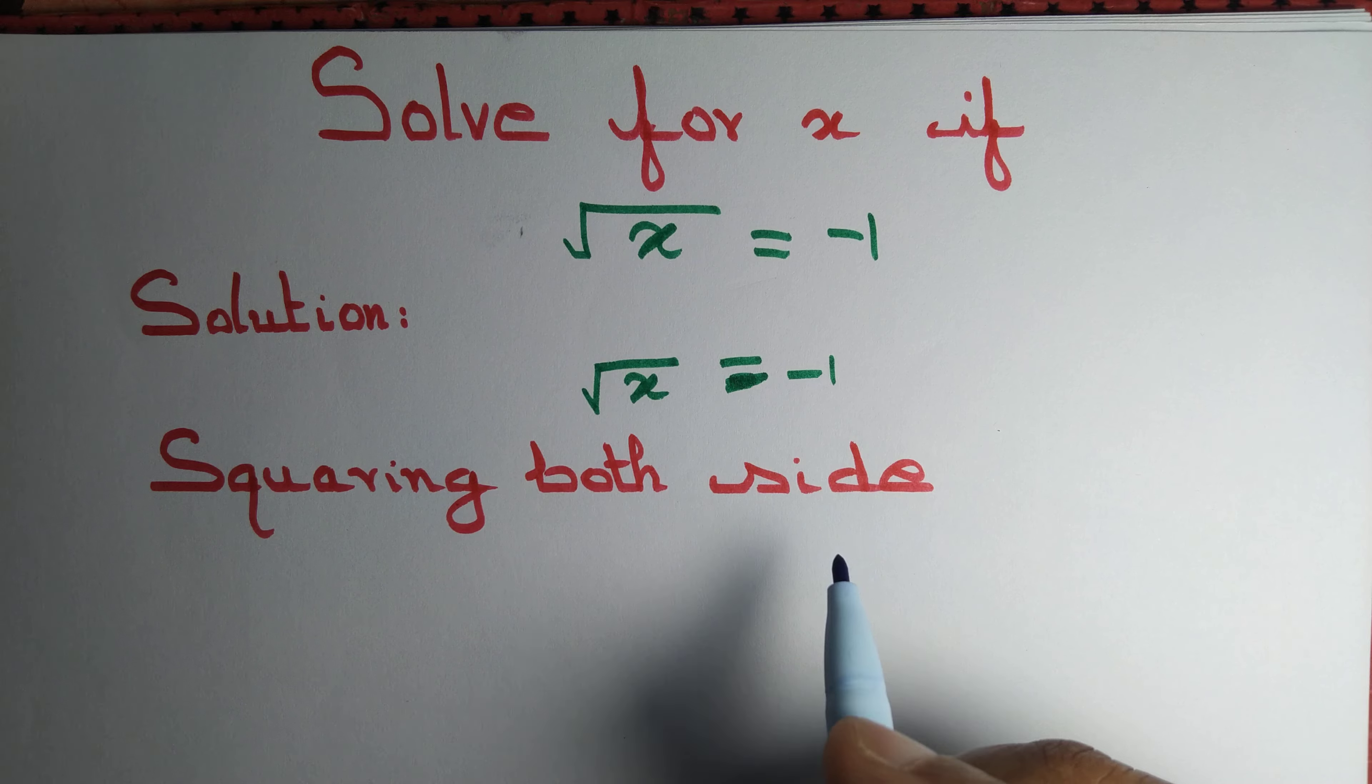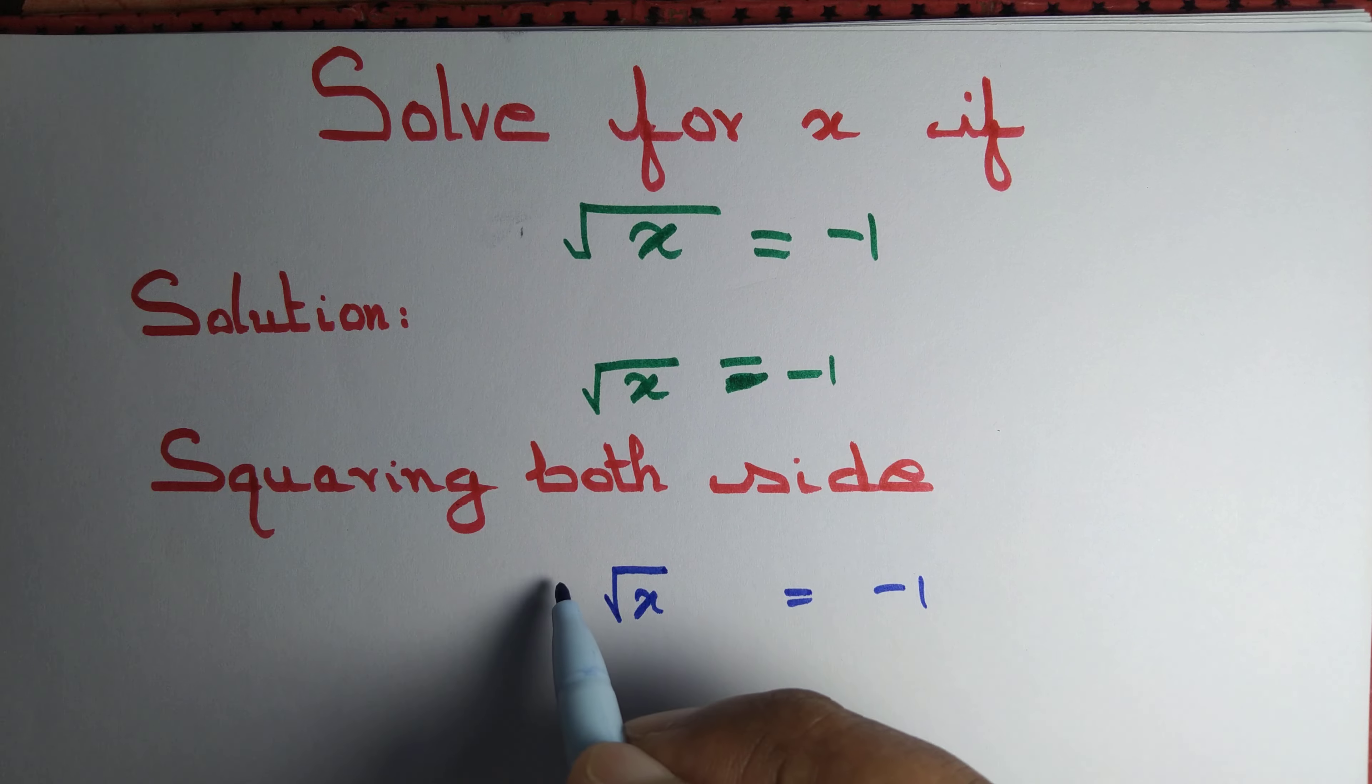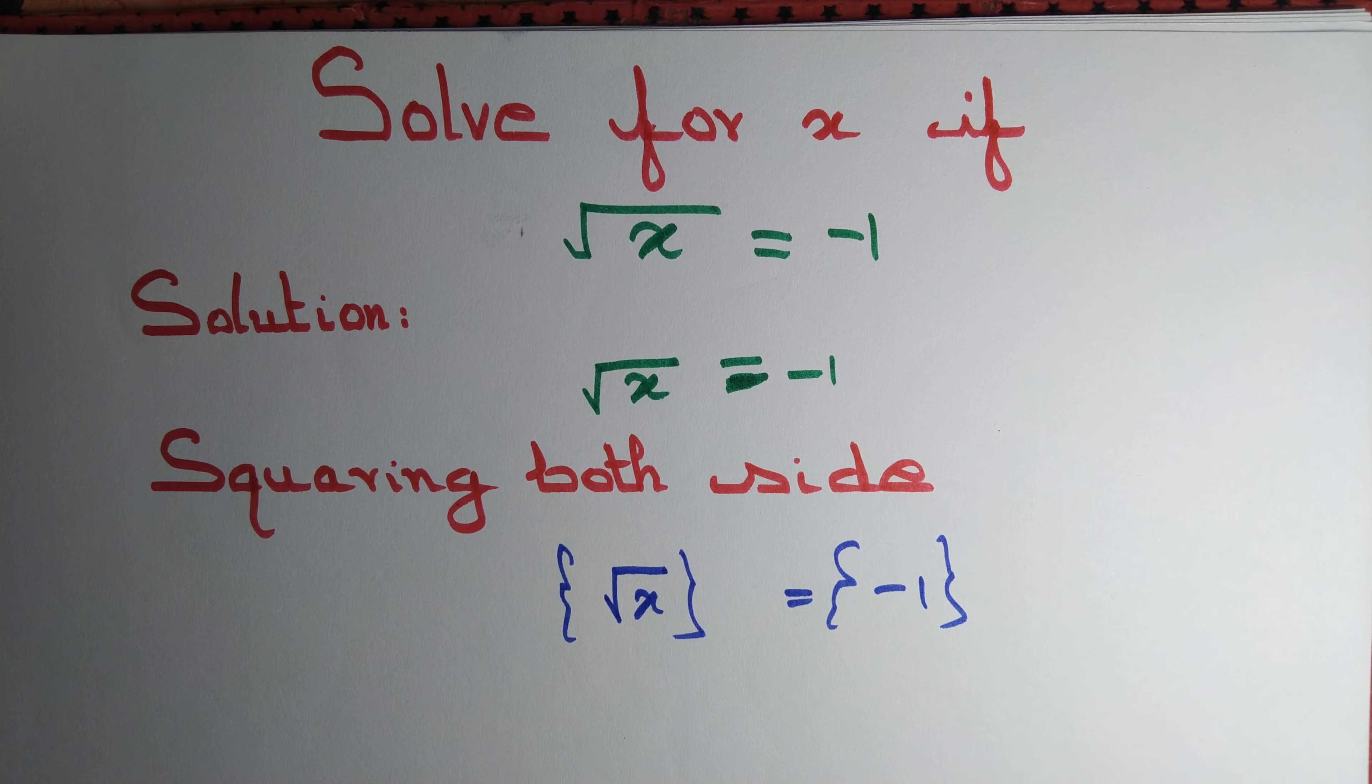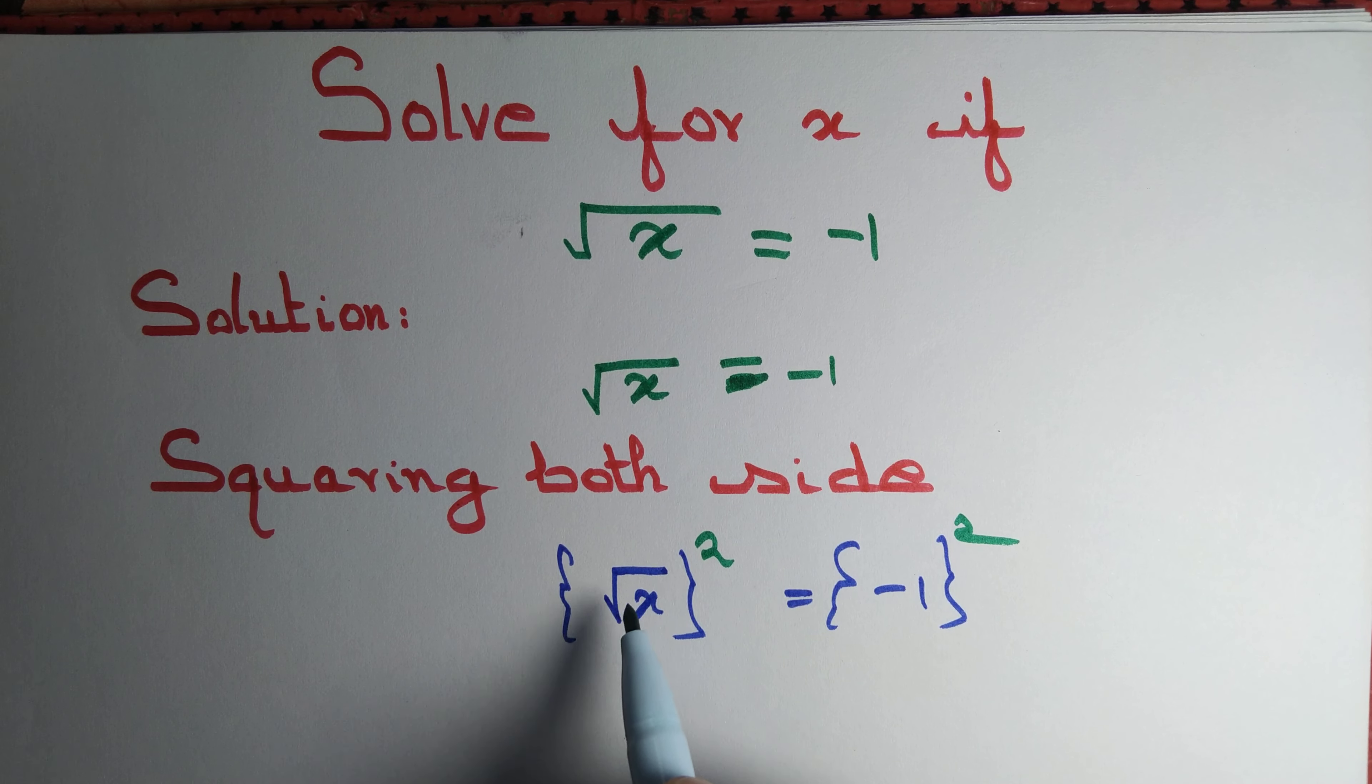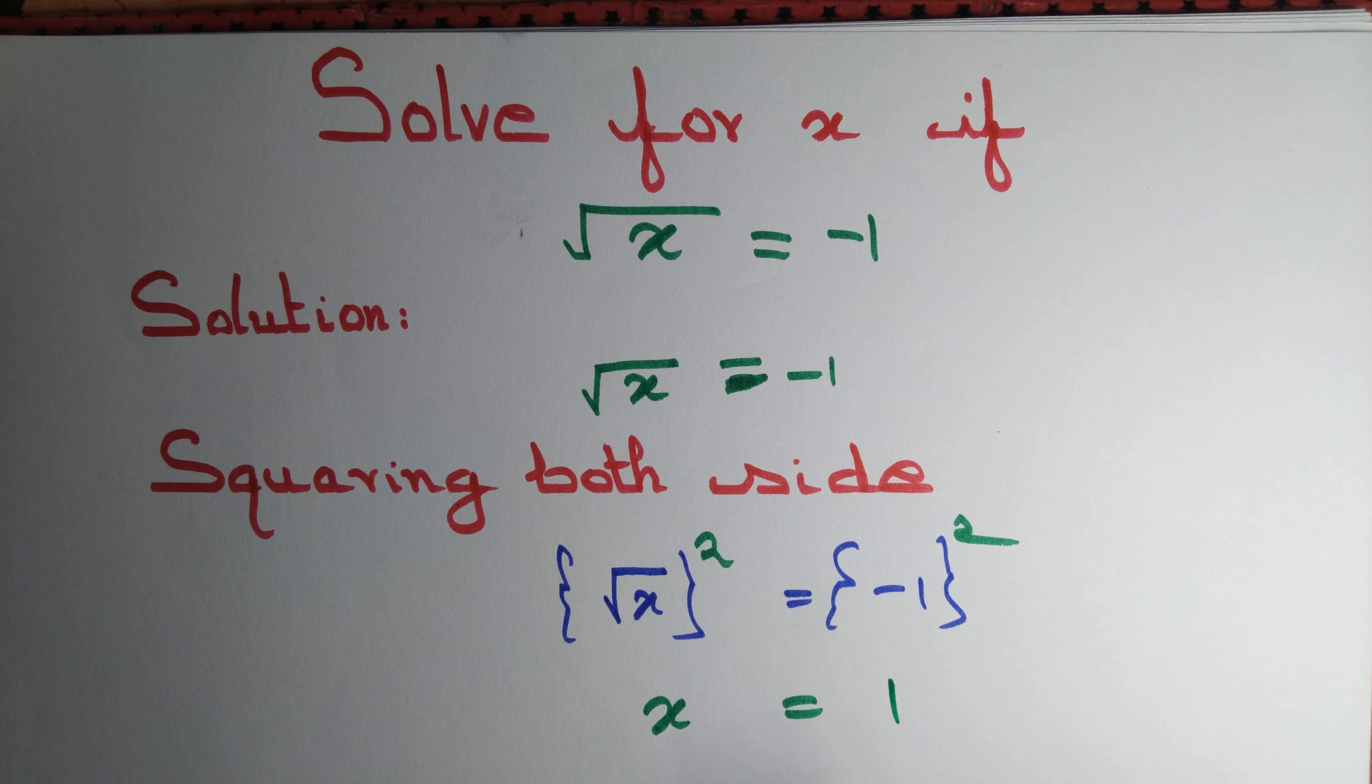If we square both sides, then we obtain √x = -1. When we square both sides, the root and square will cancel, so x = (-1)² = 1.